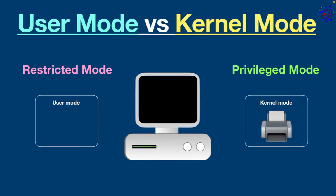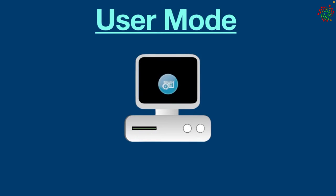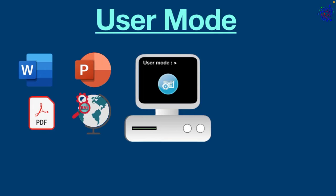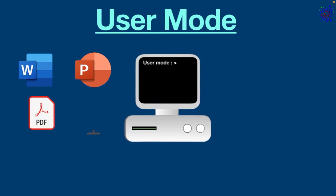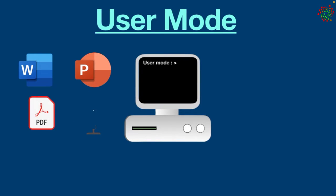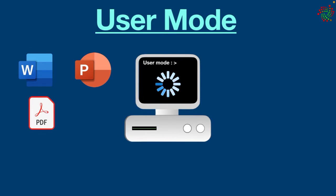Let's discuss user mode first. When we open an application on a computer, it runs in user mode by default. Some examples are Word, PowerPoint, PDF files, and browsing the internet. These are application programs, so they always run in user mode. For example, when we run a game on an operating system, the operating system launches that program in user mode.